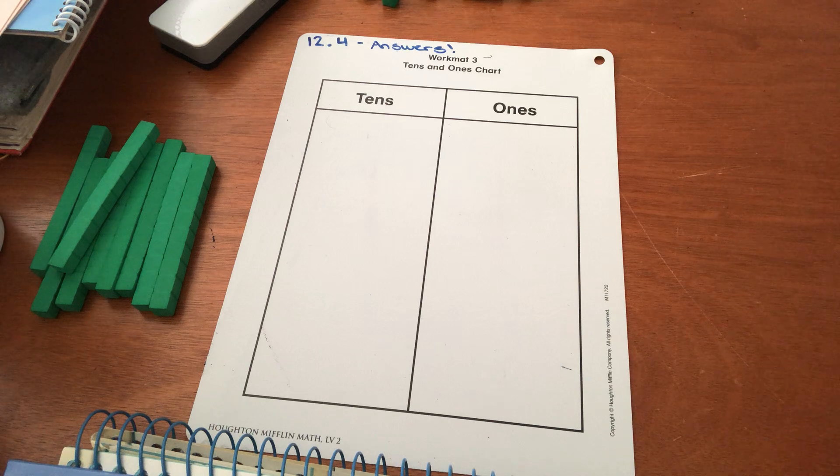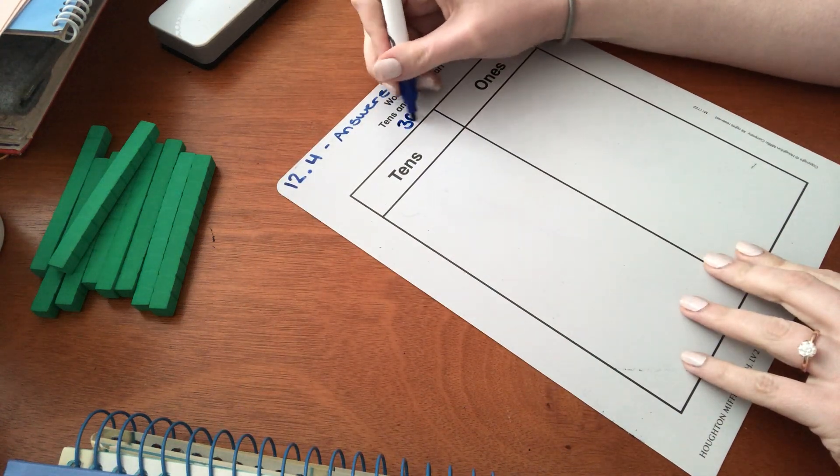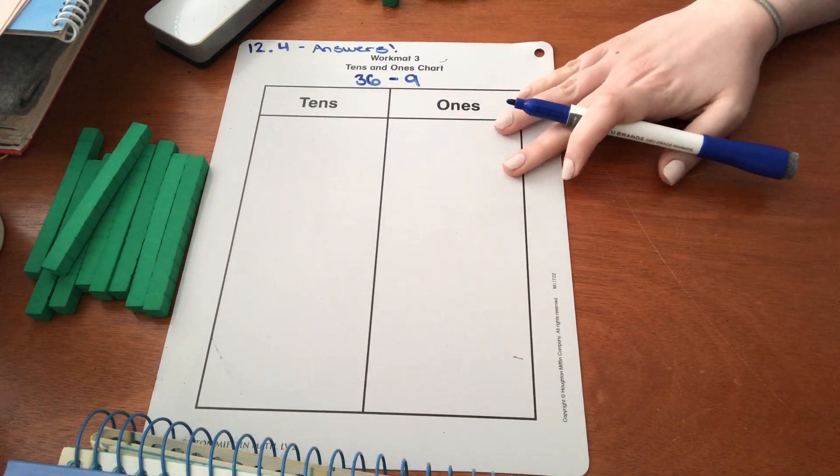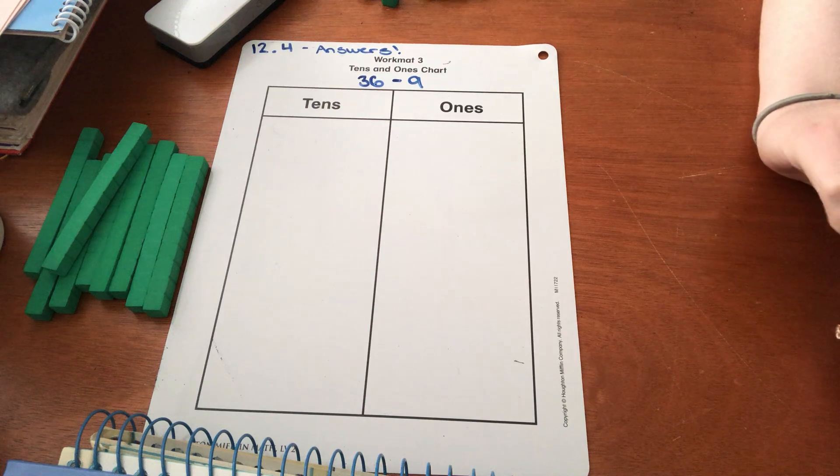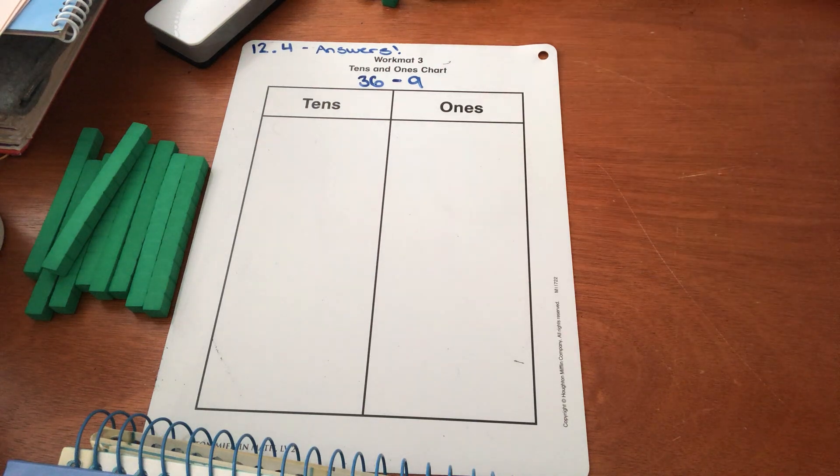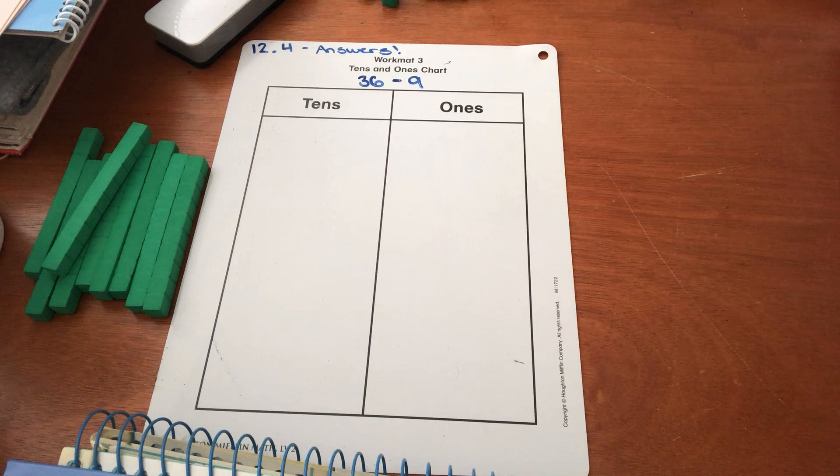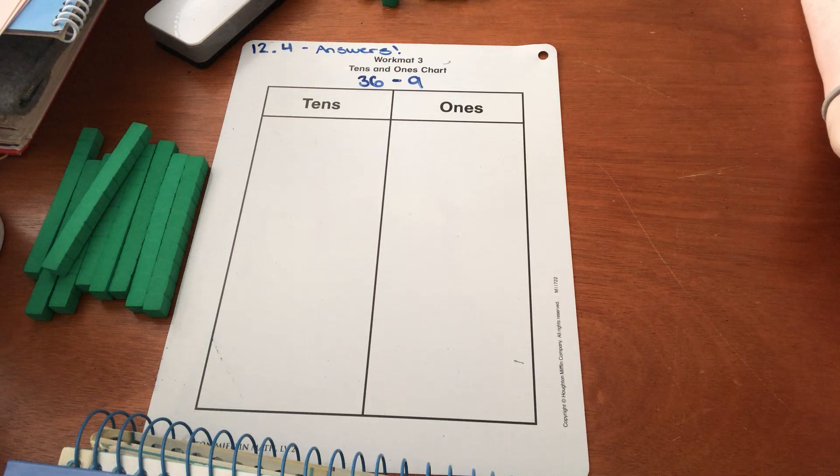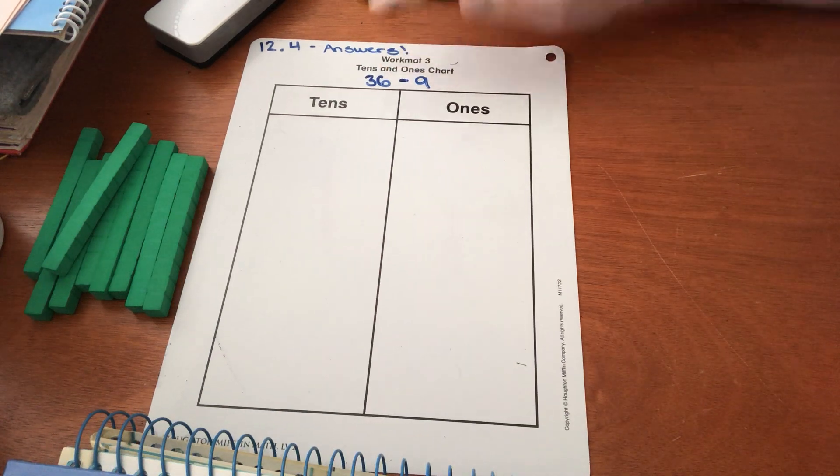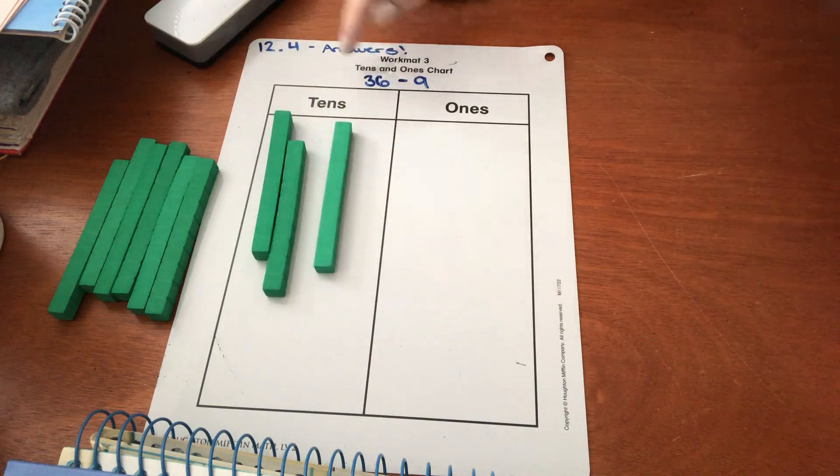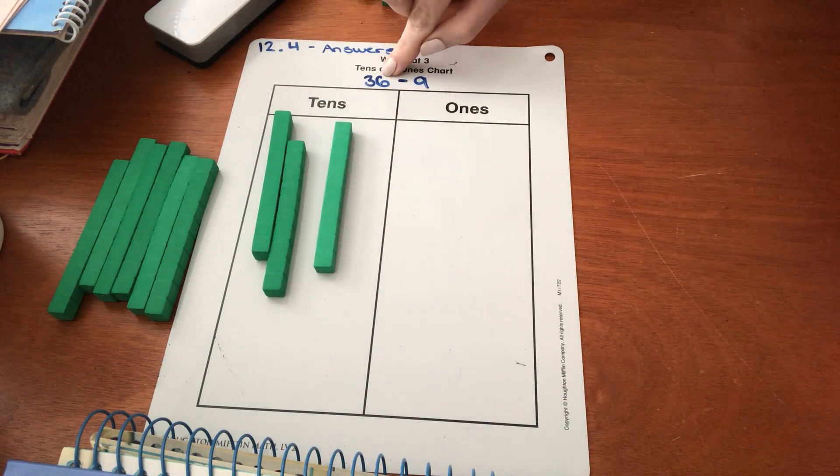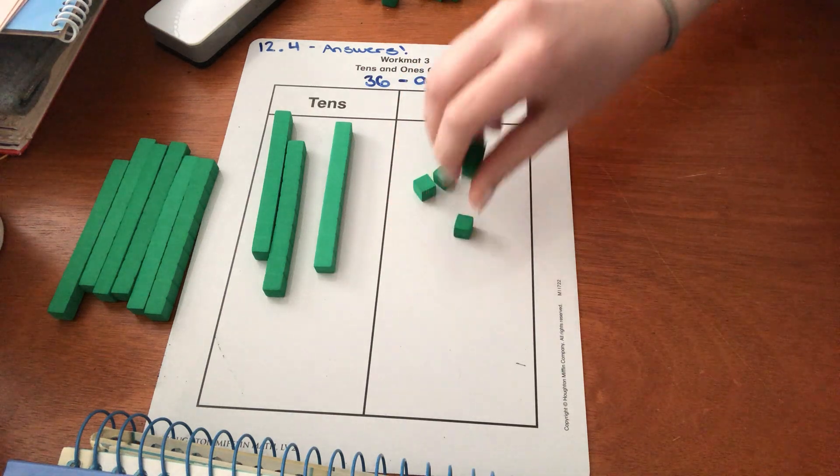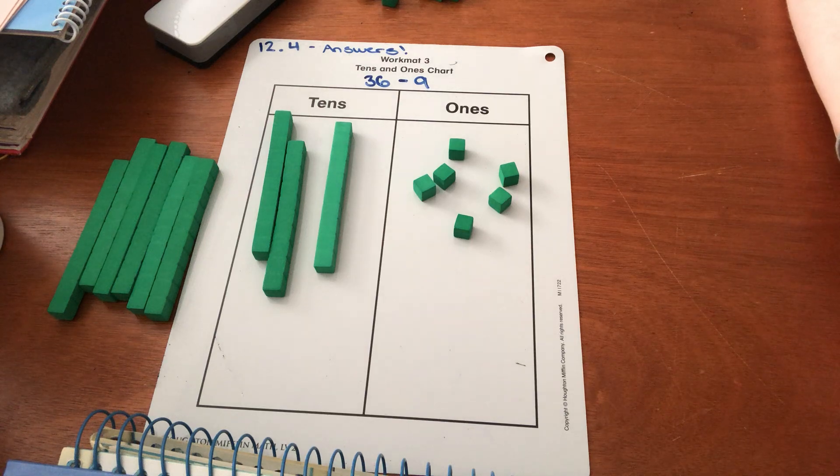Okay, so the question that we're on now is 36 minus 9. Column number 1, which number is bigger, 36 or 9? You're probably noticing a pattern here. The bigger number is always going to be the first number when you're subtracting. So 36. 36 means we need three tens and how many ones? Six ones. Awesome. One, two, three, four, five, six. Amazing. Great job.